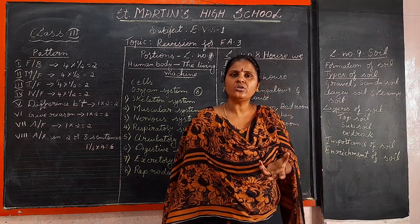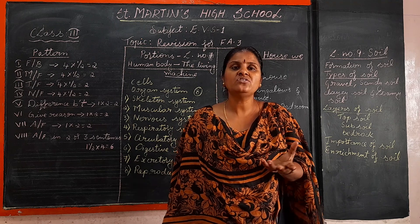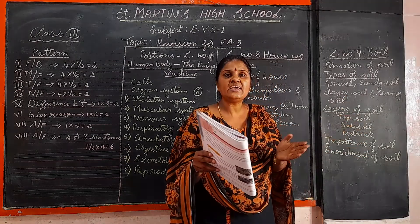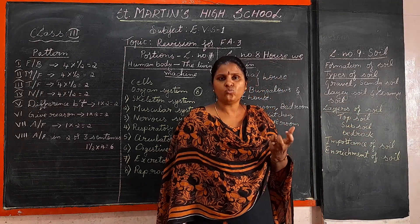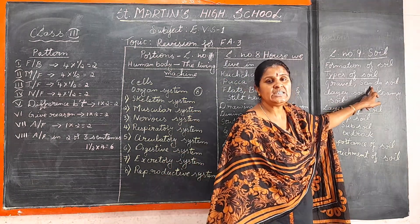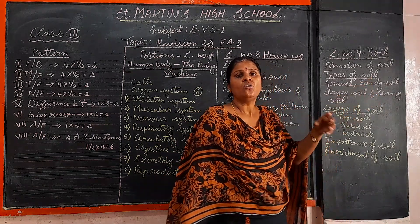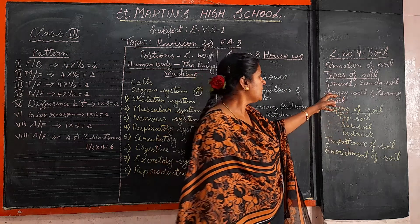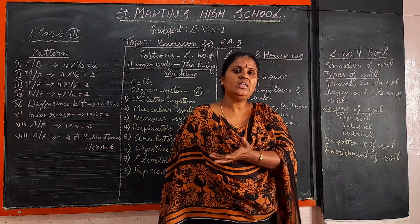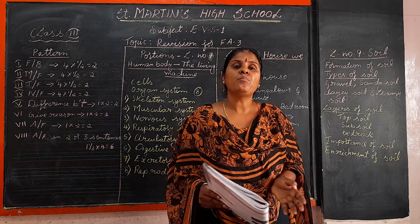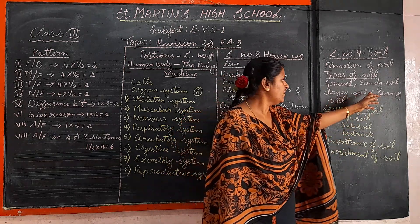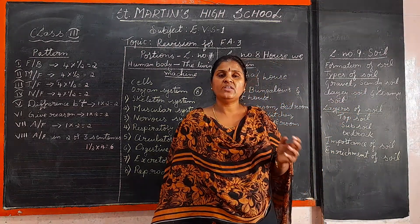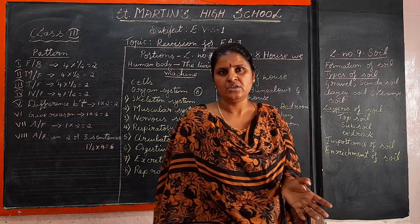Sandy soil does not retain water because it has more air spaces. Sandy soil is found in deserts and very few plants can grow there. Clay soil has less air space so it retains more water. Pots are made from clay soil. Loamy soil is a mix of sandy and clay soil and is the best for growing crops.